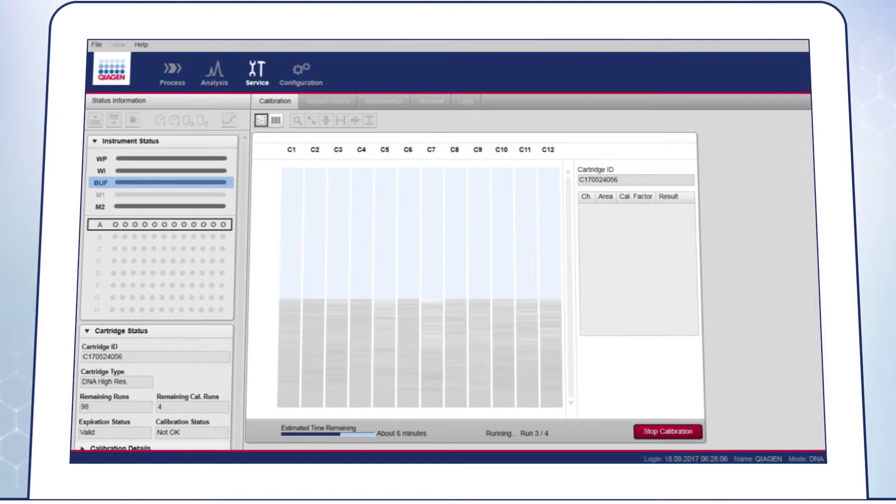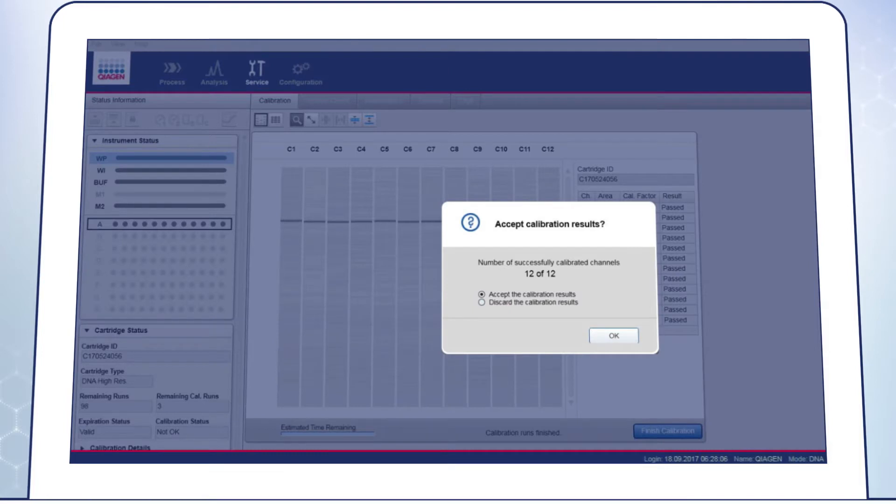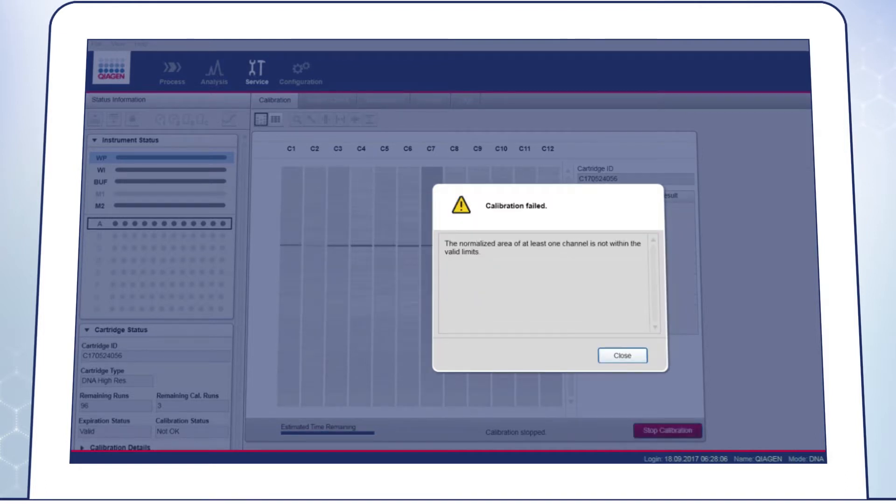Once the calibration is complete, the calibration result, passed or failed, is displayed next to the gel image. You can then check the calibration details in the software. Once the calibration is successful, the Kaixcel cartridge can be used. If the calibration fails, we recommend performing a hot water purge, as described in the Troubleshooting section of the User Manual.